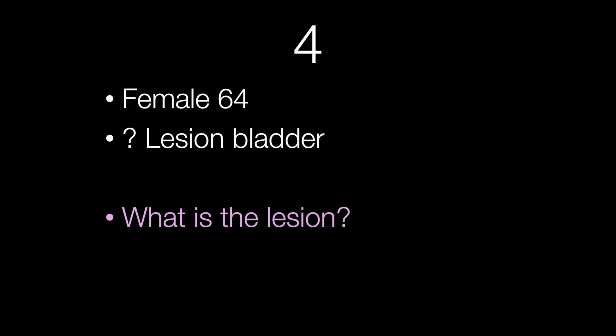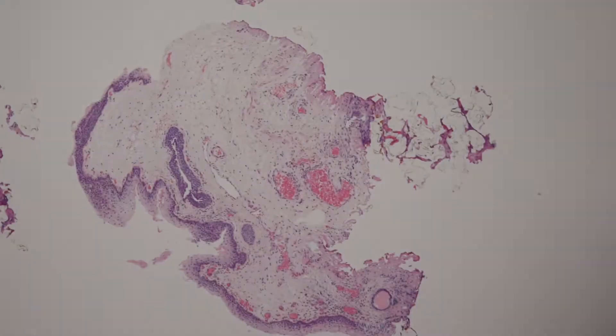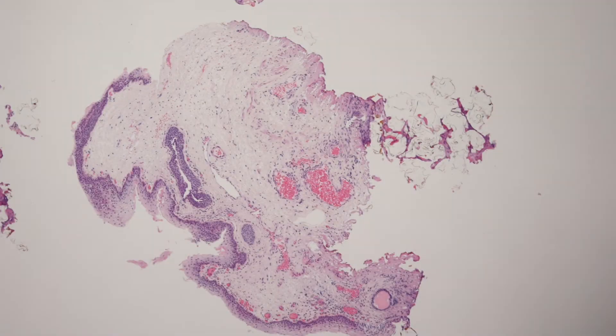Case number four is from a female of 64 with a lesion in the bladder. What is the lesion? This is a low power view. A bit of a clue for you is the relevant pathology on the right side of the picture.